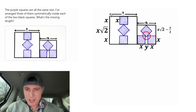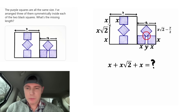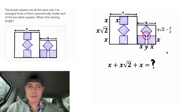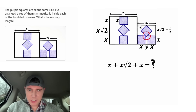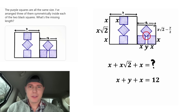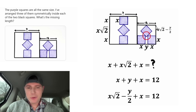For the first equation, this is a square, which means this length is the same thing as this length. So we can write X plus X root two plus X is equal to the question mark, and this is what we're trying to solve for. For another equation, the base matches the top, so we can say X plus Y plus X equals 12. For the last equation, this side equals the top, so we can write X root two minus Y over two plus X equals 12.